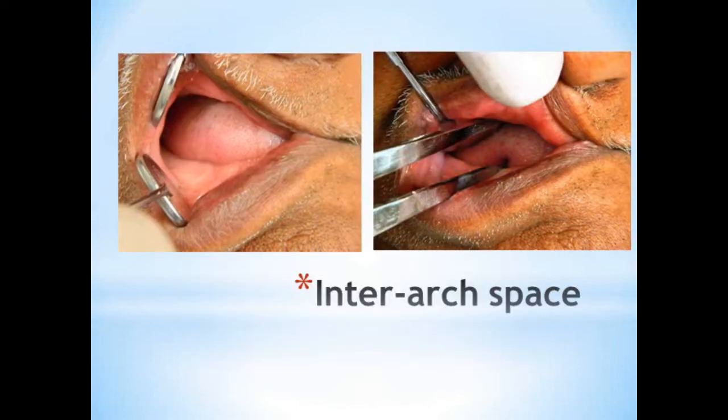Next is the interarch space. Before that, regarding the residual ridge form, you can expect a question on Atwood's classification of resorbed ridges — that is very important and you should never miss it. There are six orders: pre-extraction, post-extraction, high well-rounded, knife edge, low well-rounded, and depressed. That is Atwood's classification of resorbed ridges.